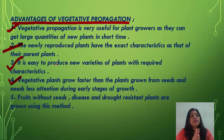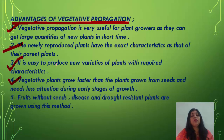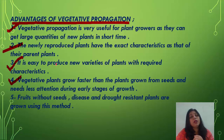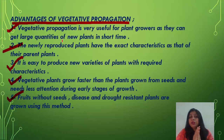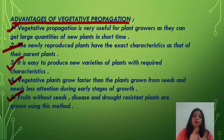Fourth, vegetatively propagated plants grow faster than plants grown from seeds and need less attention during early stages of growth — when seeds are sown, you must carefully protect them from birds and insects, but vegetatively propagated plants need much less attention. Fifth, for fruits without seeds such as banana and pineapple, vegetative propagation is essential, as we can also use this method to grow disease-resistant or drought-resistant plants.